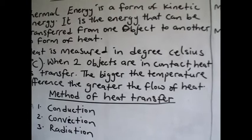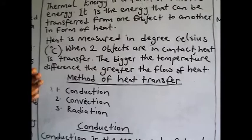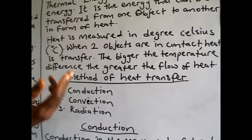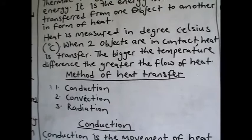When two objects are in contact, heat is transferred. When you bring two objects together, there is bound to be a transfer of heat from the one that is hotter to the one that is less hot. The bigger the temperature difference, the greater the flow of heat.